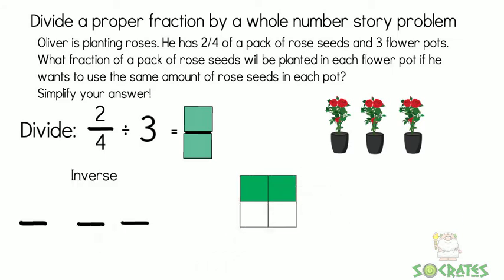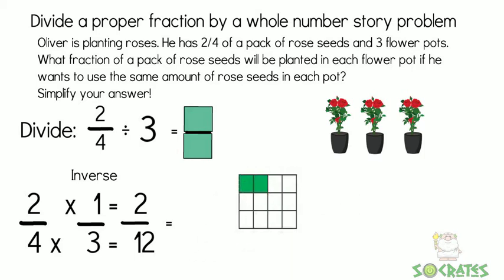So we're dividing. We've got two-fourths, and we're gonna divide that by three. In order to do that, we have to inverse and multiply. So we have two-fourths times one-third, which gives us two-twelfths.